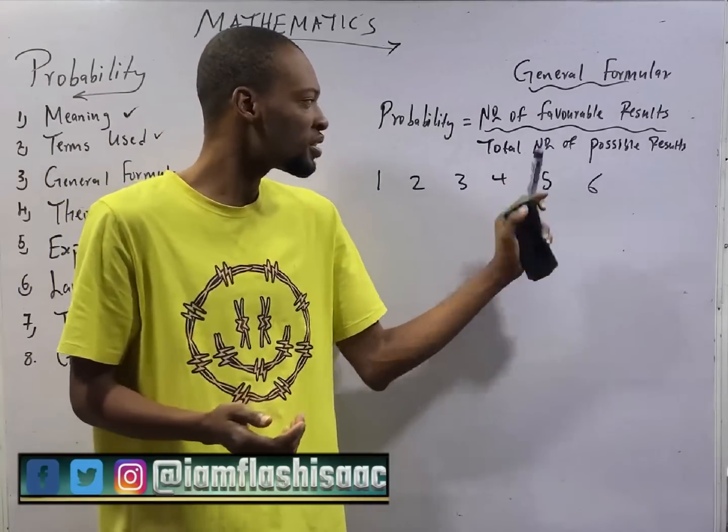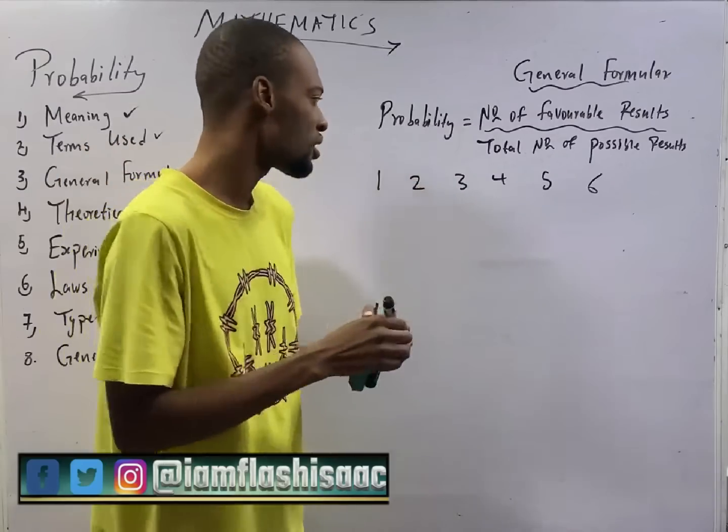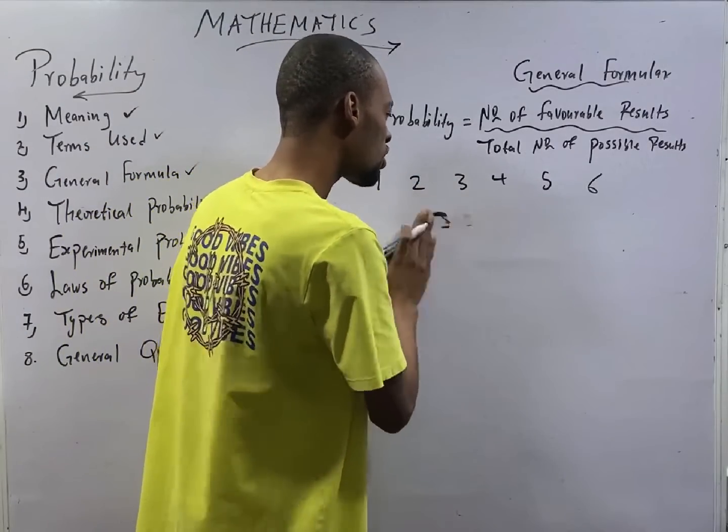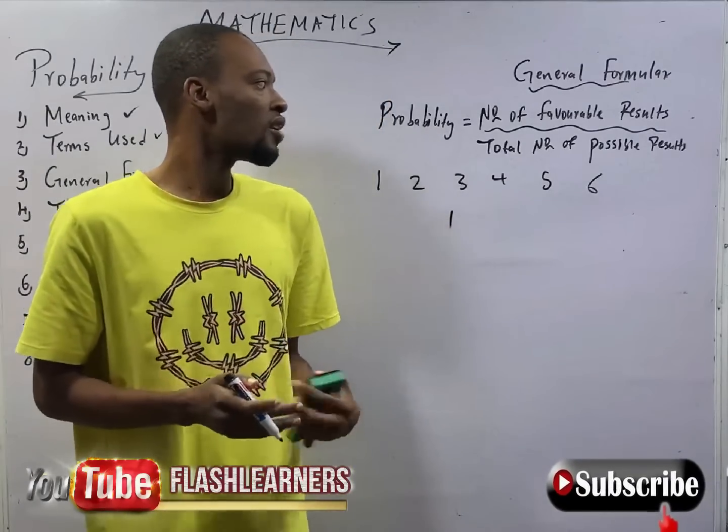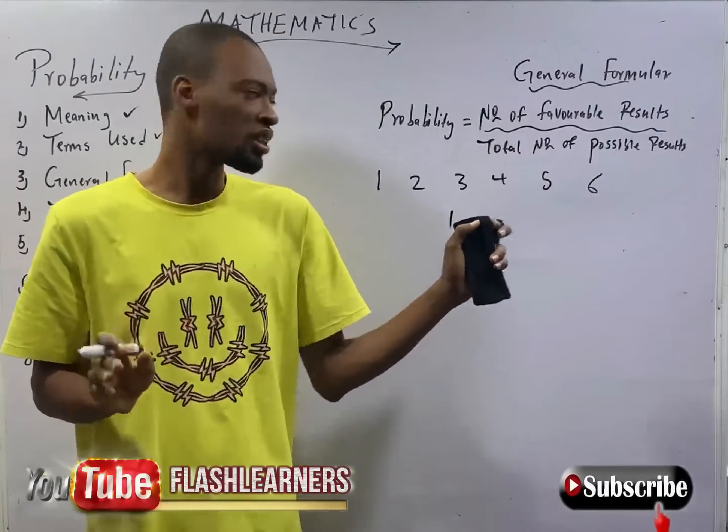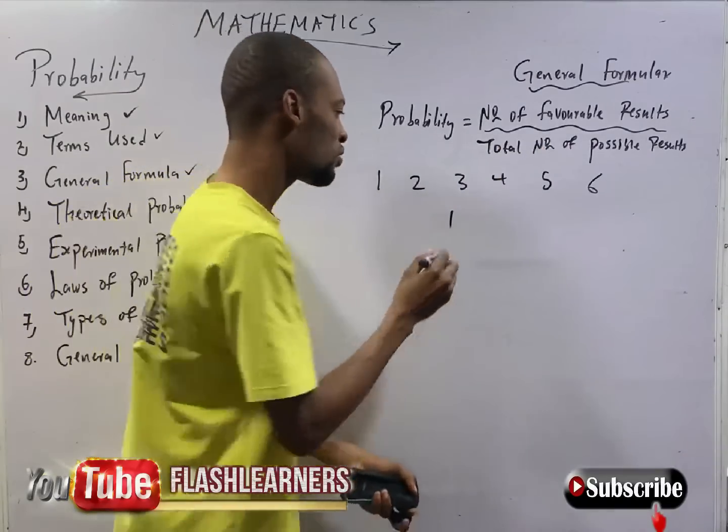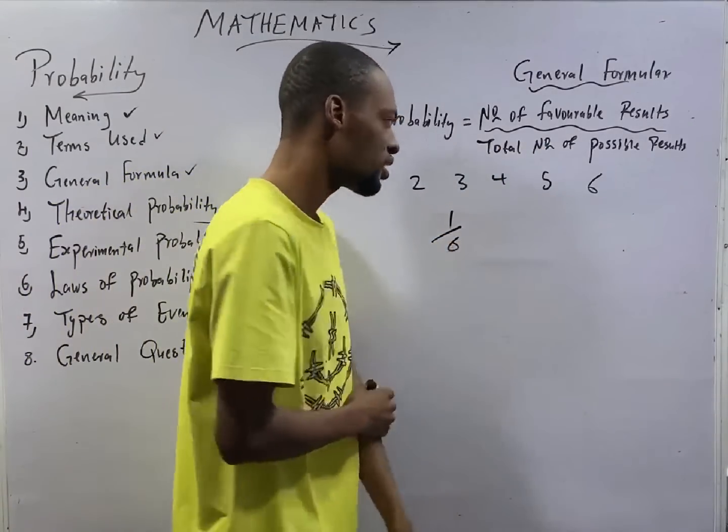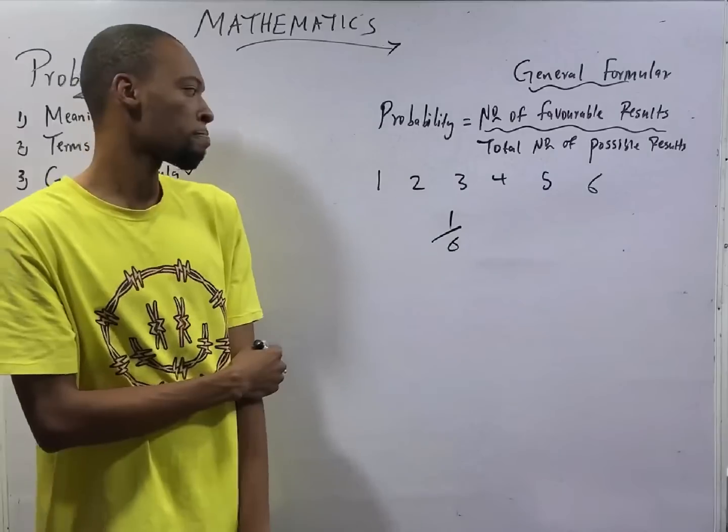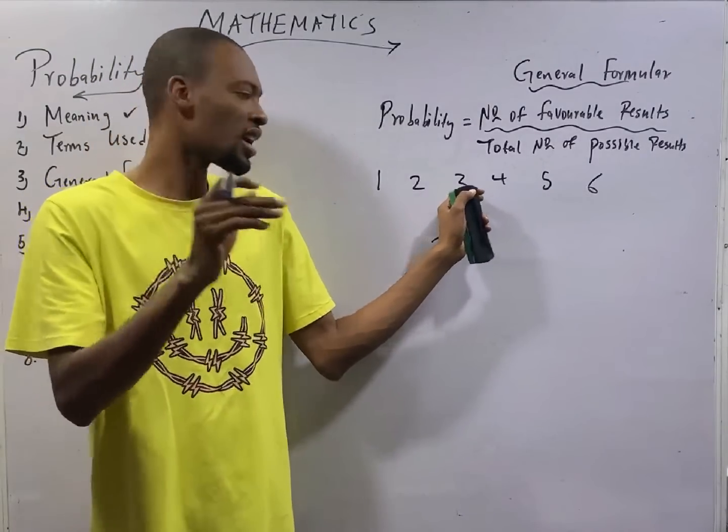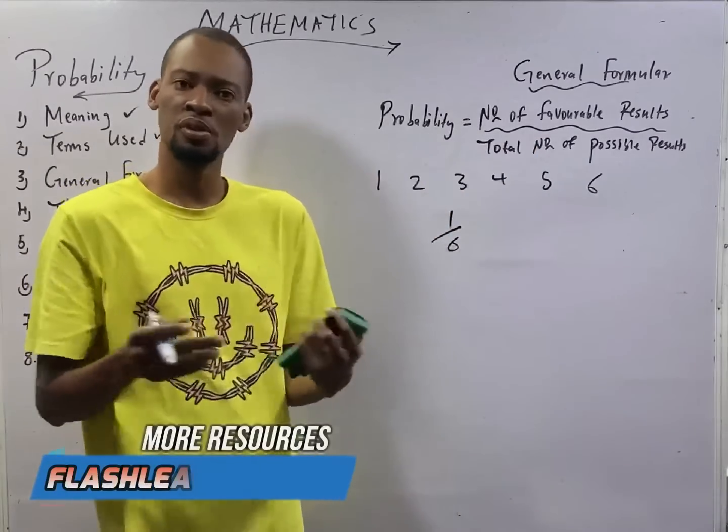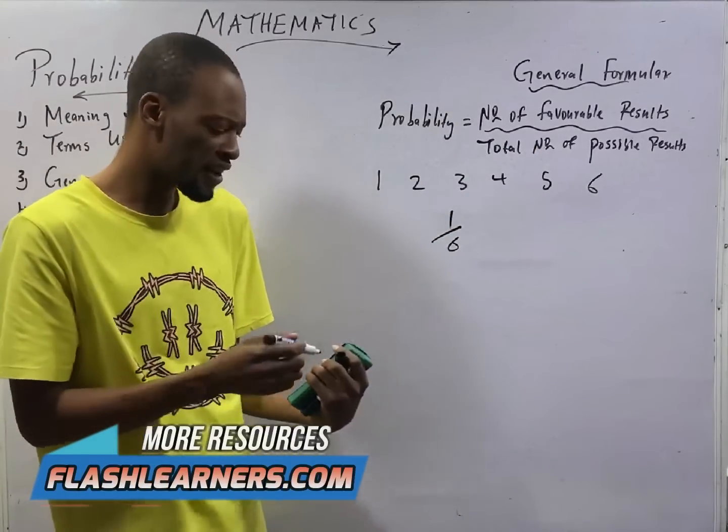So, which is 3, or just 1 out of the total result, over the total number of possible results is 6. So, 1 over 6. This is your answer. Because, the probability of 3 facing up is just 1 out of the total of 6 possible results.